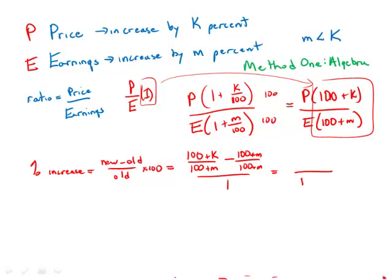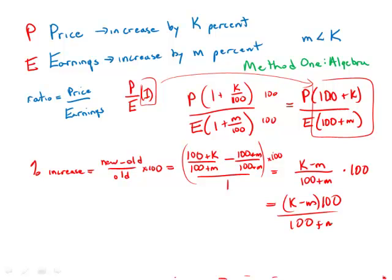Then we multiply all this by 100. We get (100 + K) minus (100 + M), that will just be K minus M, whole thing times 100. So this is (K - M) times 100 over (100 + M).